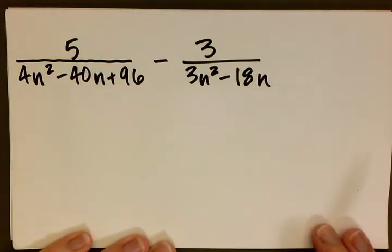The question on this one asks us to perform the indicated operation. The question is 5 over 4n squared minus 40n plus 96, subtract from that 3 over 3n squared minus 18n.